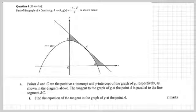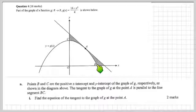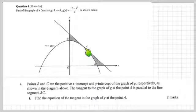Having thought about this, let me come up with a game plan. We always need a game plan. If I can work out the numerical value of the x-intercept and y-intercept — which is going to be easy since I've got the rule for g — then I can work out the gradient of the line joining B and C. That's going to be a numerical gradient value.